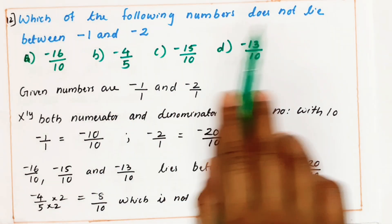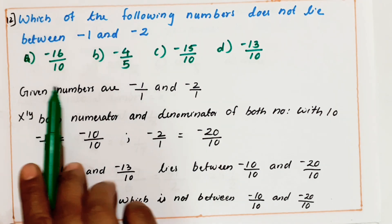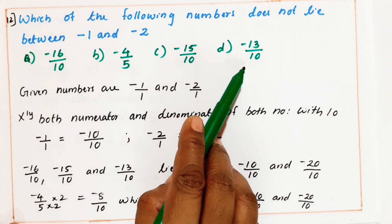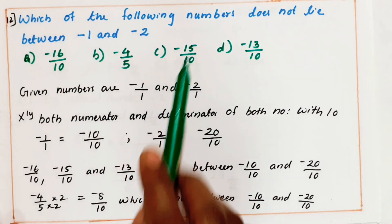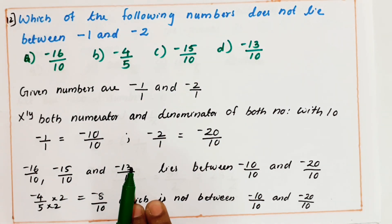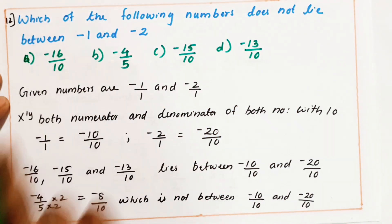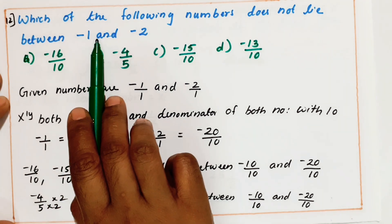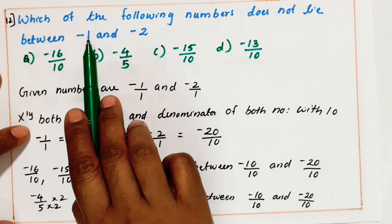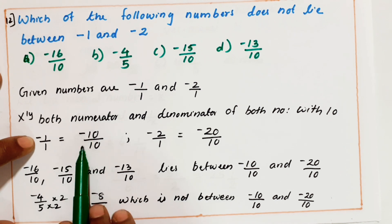Next question: which of the following numbers does not lie between minus 1 and minus 2? They gave numbers with denominator 10, 10, 5, 10. So what I am doing is multiplying both numerator and denominator with 10. I can write minus 1 as minus 1 by 1 — multiplying both numerator and denominator with 10, that is minus 10 by 10. And minus 2 by 1 multiplied by 10 gives minus 20 by 10.